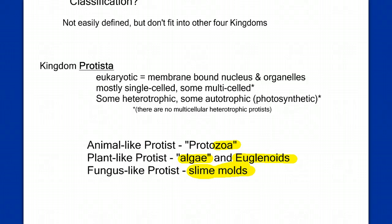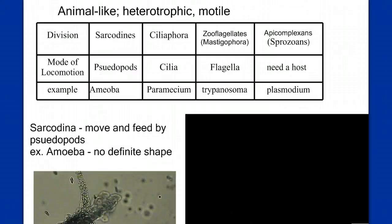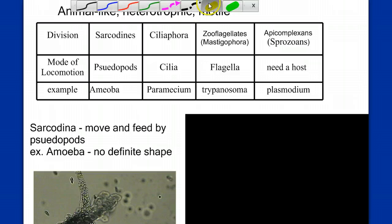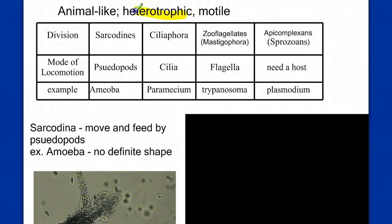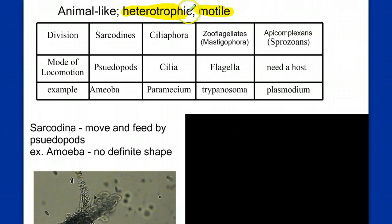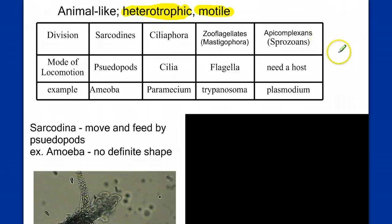So let's get started with the animal-like protists. In what ways are they animal-like? They're heterotrophic — meaning they have to feed — and most of them are mobile. They move about. Those are two qualities that we associate with animals. So we're going to call this grouping the animal-like protists, sometimes referred to as the protozoans.